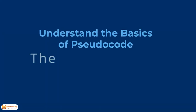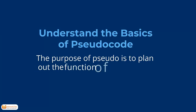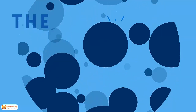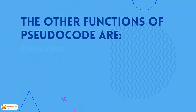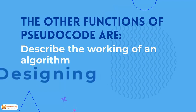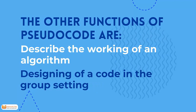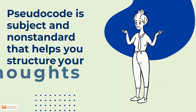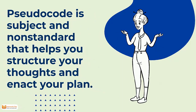Step one: Understand the basics of pseudocode. The purpose is to plan out the function of an algorithm before using it in coding. Other functions of pseudocode include driving the working of an algorithm and designing code in a group setting. Pseudocode is subjective and non-standard, helping to organize your thoughts and enact your plan.